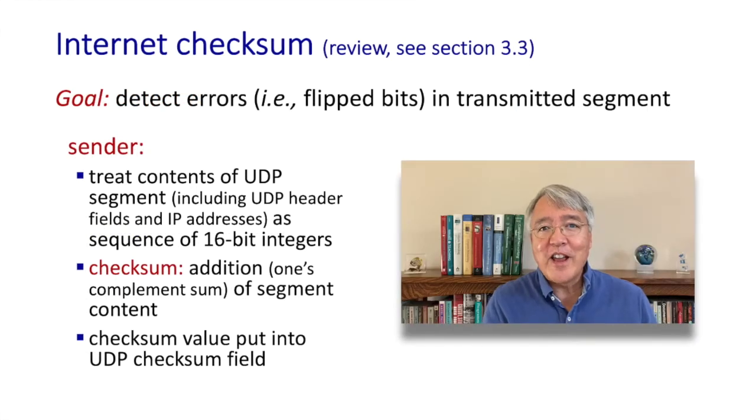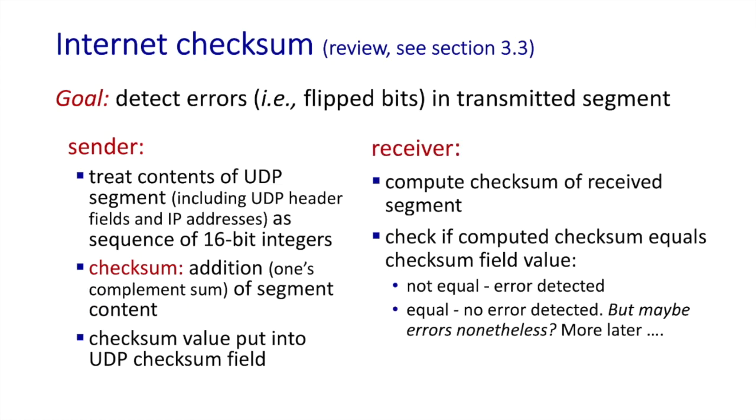Well, we've covered the internet checksum already in section 3.3, and in some ways the checksum is very similar to parity. Instead of adding up bits though, we're adding up bytes with the internet checksum. But conceptually the behavior is the same. On the sender side, we simply add up the bytes, compute the checksum, and send the checksum along with the data being checksumed. The receiver action is also conceptually similar to what we've seen above.